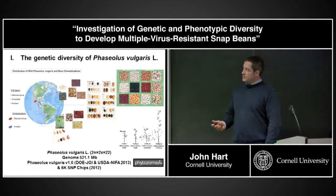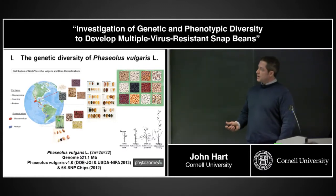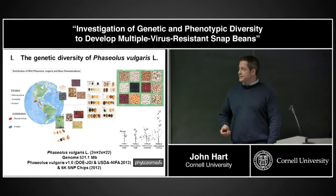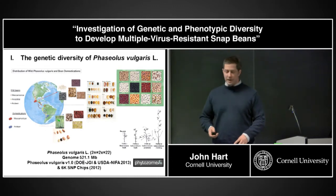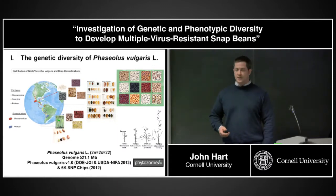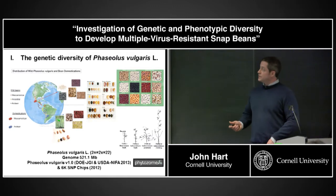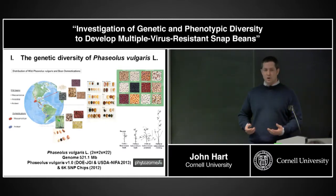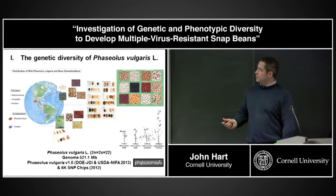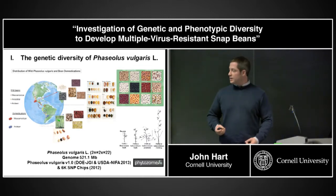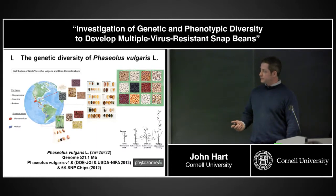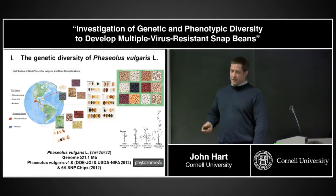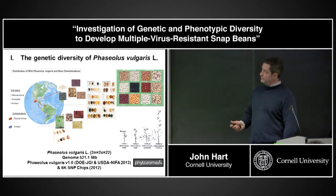Snap beans in particular are thought to come from the Andean Domestication Center, though the evidence is limited. More recent molecular marker evidence suggests that snap bean has a lot more introgression between the two gene pools. This could represent a source of novel and important allelic variation to improve common bean. The seed type of snap beans has taken on a cylinder shape, reflecting selection for a fleshy pod and reduced fiber, much of which occurred after the Columbian Exchange.